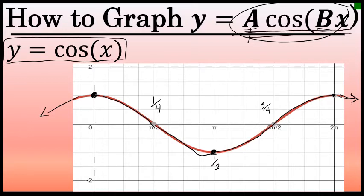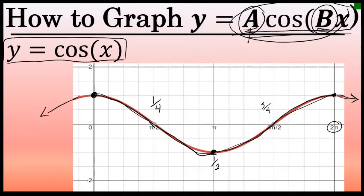This pattern is the basis for any equation of the form y equals a cosine of bx, but the values of a and b will change its shape slightly. It will still be a cyclical curve that begins at the top of its amplitude, travels to the bottom halfway through, and returns to the top at the end. The value of a and b will affect how high and low the graph goes and how many units on the x-axis it takes to complete each cycle.